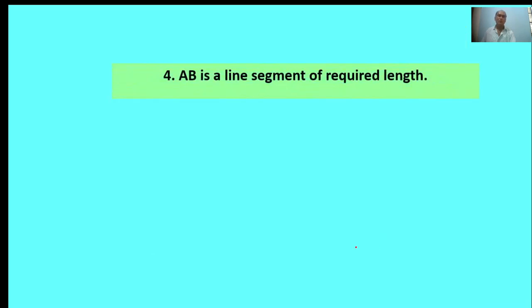Fourth: AB is a line segment of required length. AB is a line segment. This is the 4.7 centimeters required length line.